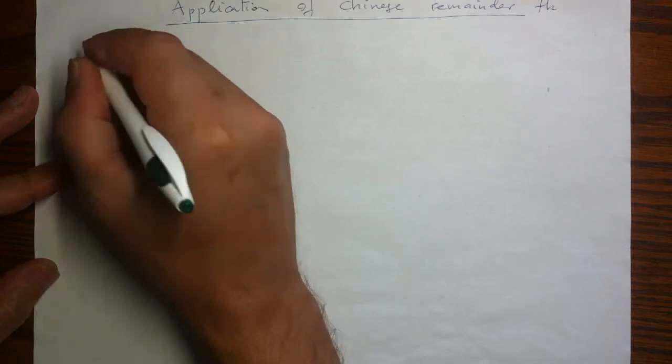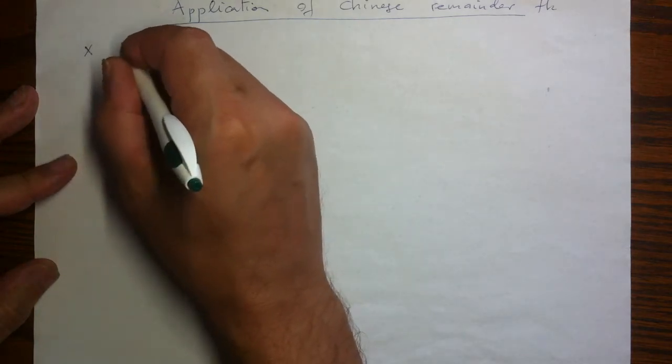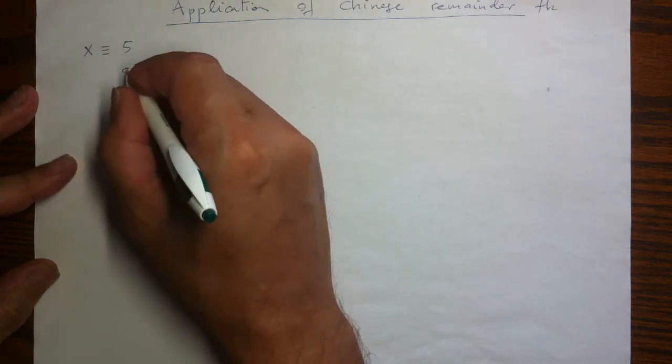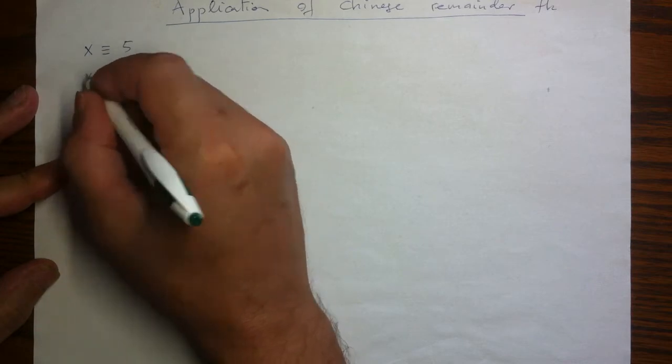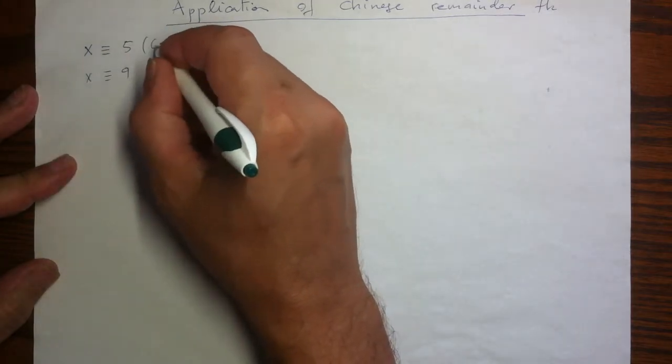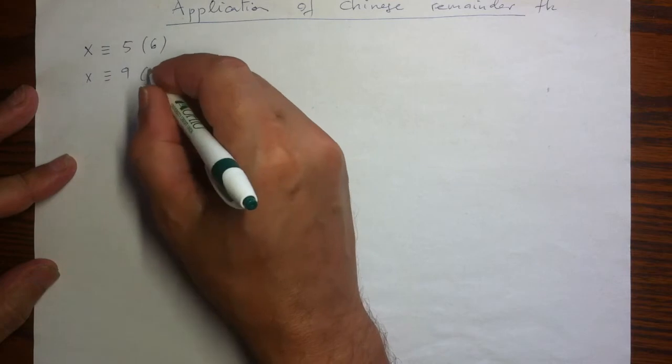Let's imagine a situation where we have two numbers, say 5 and 9. And these are prescribed congruence classes mod, say, 6 and 11.